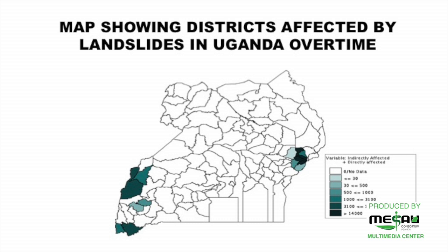Here we have a map showing the districts affected by landslides in Uganda over time. We aggregated data for about 85 years, between 1933 and 2018. The map highlights the Elgon region in the eastern part of Uganda and the Renzori region in the western part as the most affected areas.